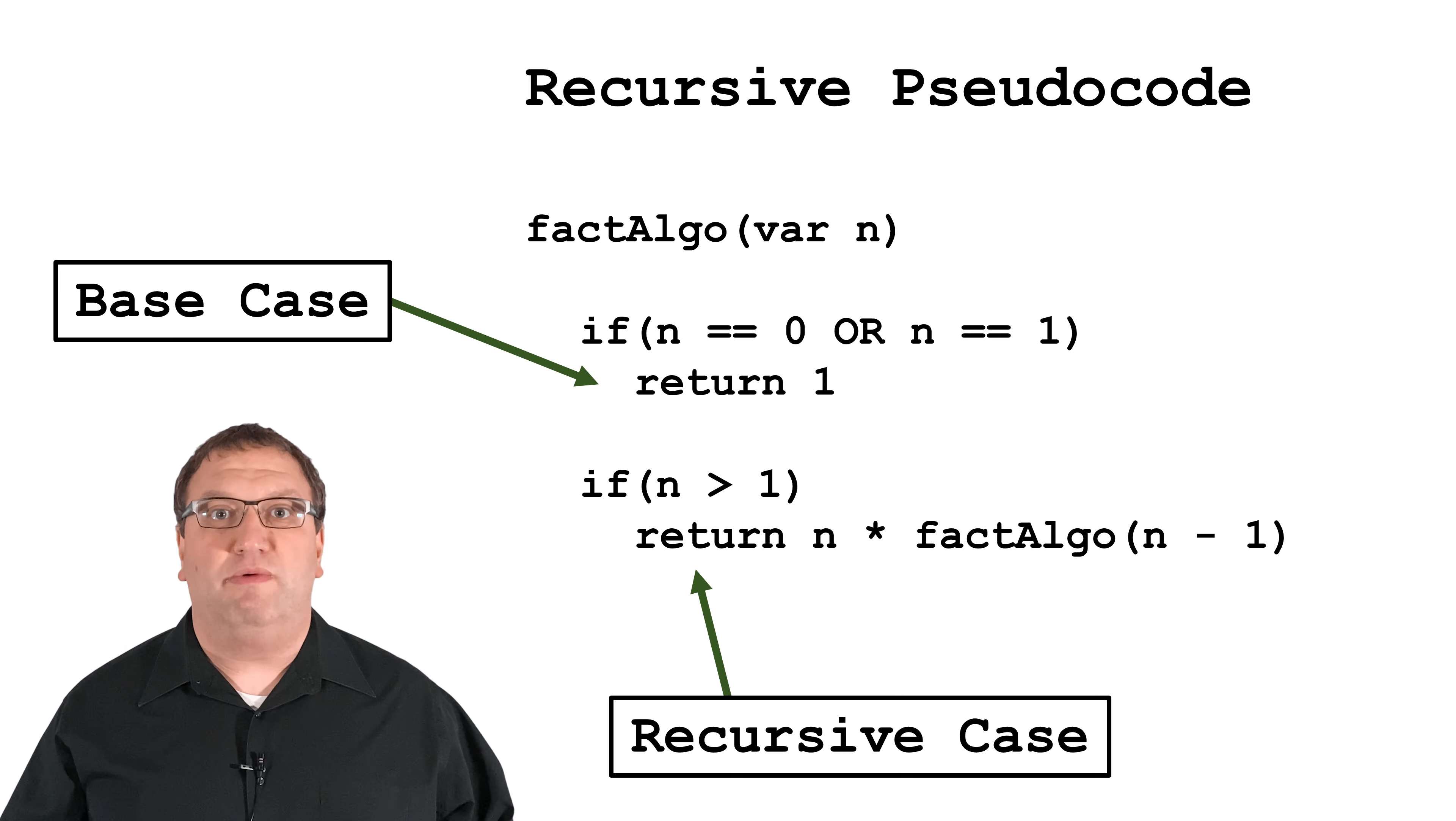It's crucial to write recursive algorithms this way, because otherwise you'll keep making recursive calls until you eventually run out of space in memory and get a stack overflow. Actually, even if you write a recursive algorithm correctly, you can still run out of memory.